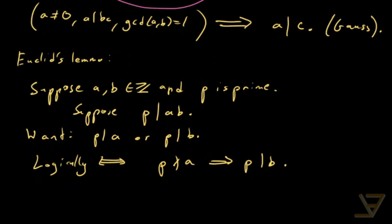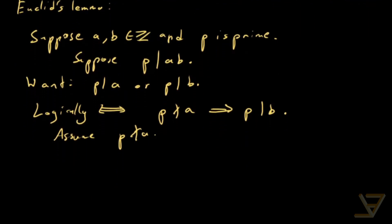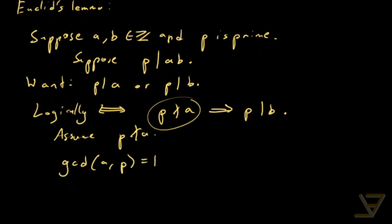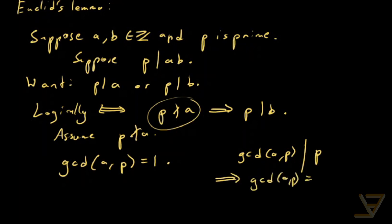So what we can do is assume P doesn't divide A, because that's this part here. What we're going to do is reinterpret this into saying that GCD(A, P) is equal to 1. We can say this because GCD(A, P) divides P, and since P is prime, GCD(A, P) is equal to 1 or P. And it can't be P because then P would divide A — P would then be a factor of A. But since that's impossible, we can say GCD(A, P) is equal to 1.